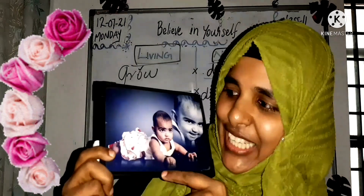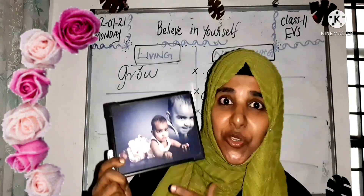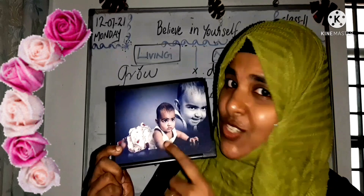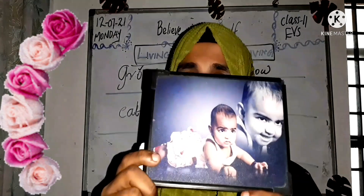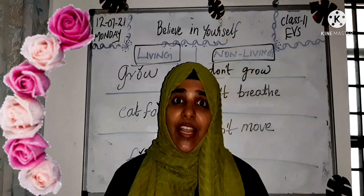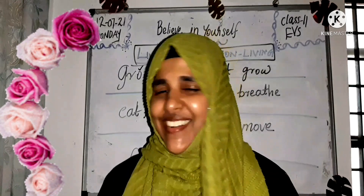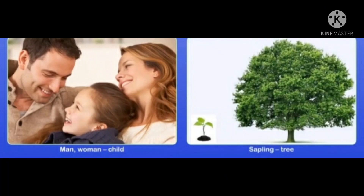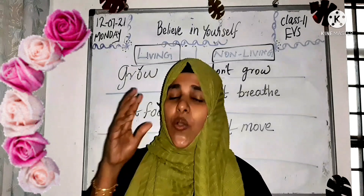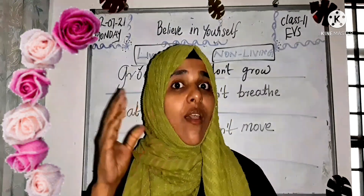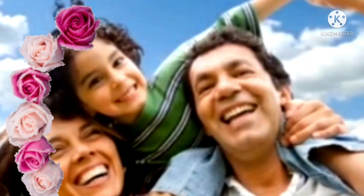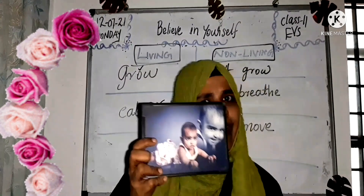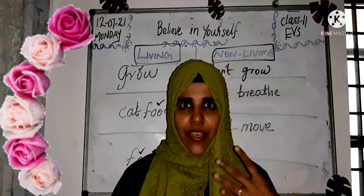Look at this photo, children — can you see this small baby? This is my baby. I am a living thing, a living organism, and I give birth to my young one. Similarly, our parents give birth to young ones. This is a special character of living organisms: living things can produce their young ones.